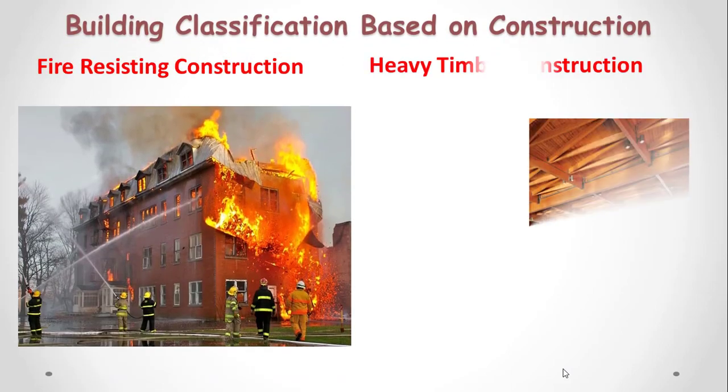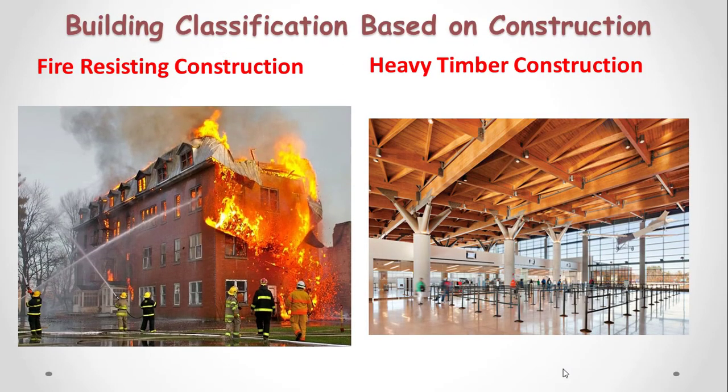We can also classify buildings based on type of construction. The first type is fire-resistant construction, where building elements such as floors, walls, columns, and roofs should be non-combustible. The internal structural members like floors and roofs are constructed out of timber, either in solid or laminated forms.